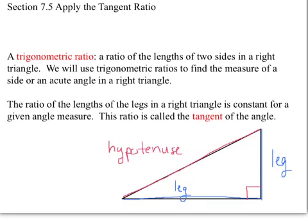We're working on section 7.5, applying the tangent ratio. We're getting into two sections where we're learning about tangents, sines, and cosines, with tangent probably being the easiest one to start with.